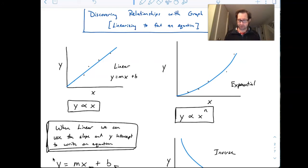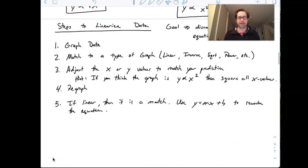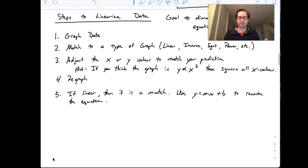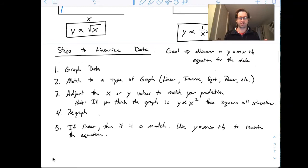So that's the next thing that we're going to take a look at. So here are the basic steps. And the goal is always to discover a y equals mx plus b relationship. So I put that right here at the top. This is our big goal. We're going to try to fit any of our data into that linear relationship. Therefore, it's called linearizing the data.